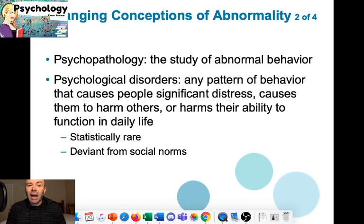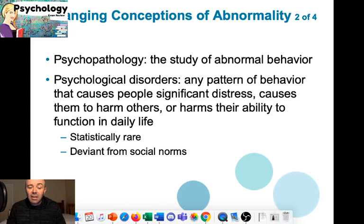Besides DDIC, another way to determine whether something is abnormal is to use statistics. All of you have no doubt seen the bell curve. Some of you are taking a stats class right now.